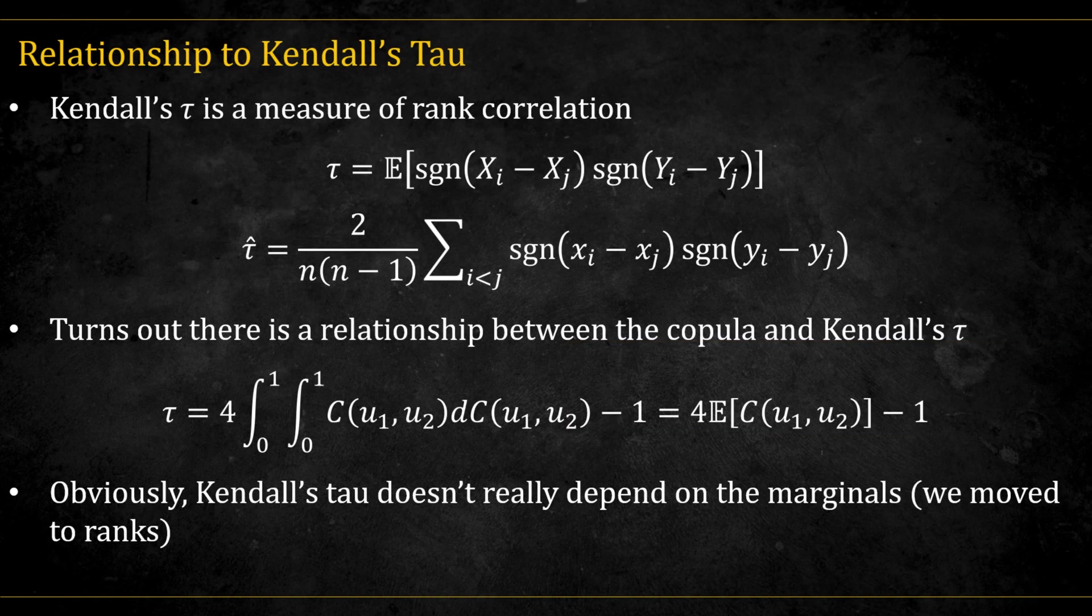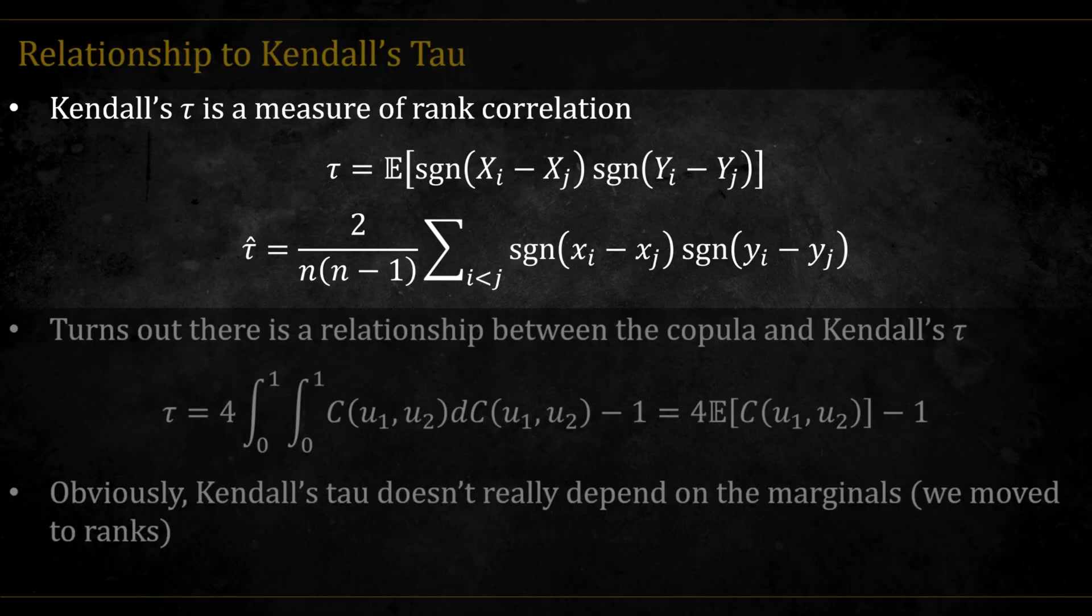There's a special link between copulas and other measures of dependence, specifically Kendall's tau and Spearman's rho. Here I'll show Kendall's tau. Kendall's tau is a rank-based measure of correlation defined as the expected value of concordance, that is, the probability that two pairs of observations are ordered the same way.